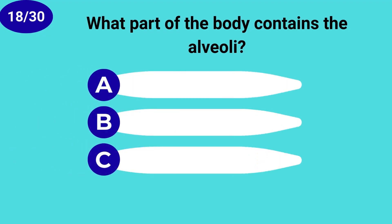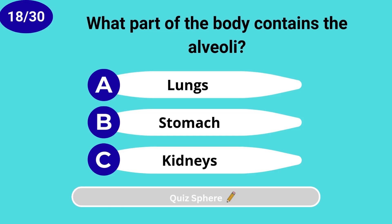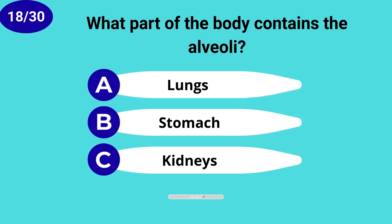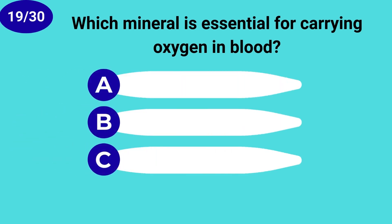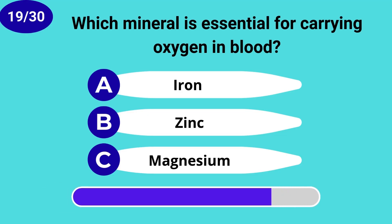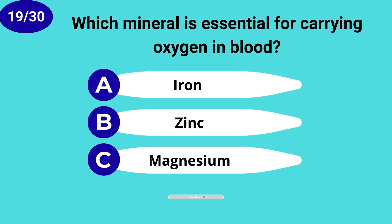What part of the body contains the alveoli? Lungs. Which mineral is essential for carrying oxygen in blood? Iron.